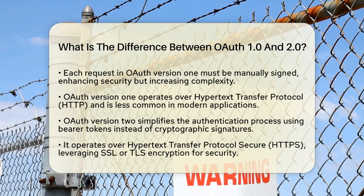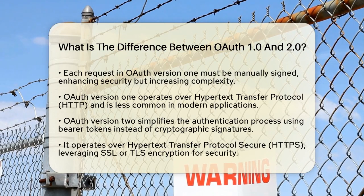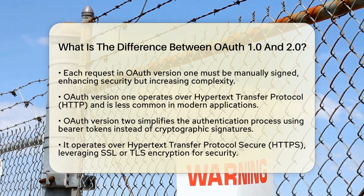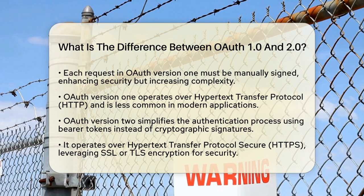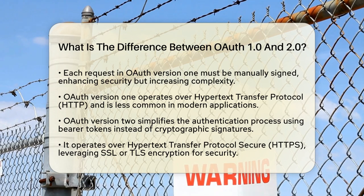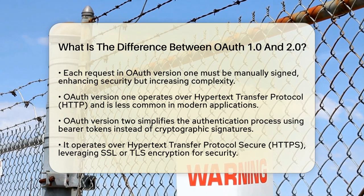On the other hand, OAuth Version 2 simplifies the process significantly. It uses bearer tokens for authentication, which means you do not need cryptographic signatures. This version operates over HTTPS, utilizing the security provided by SSL or TLS encryption. This makes OAuth Version 2 easier to implement, but it does shift some security responsibilities to the transport layer.